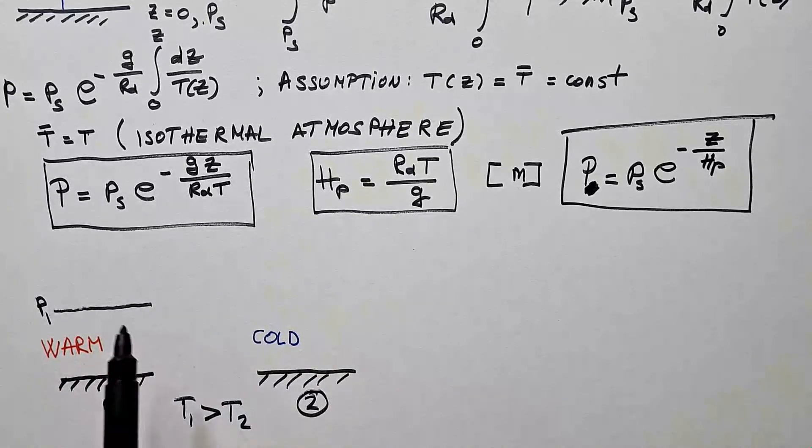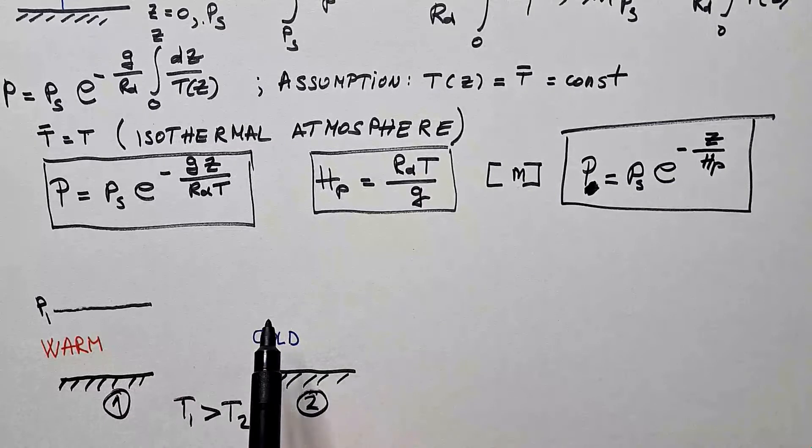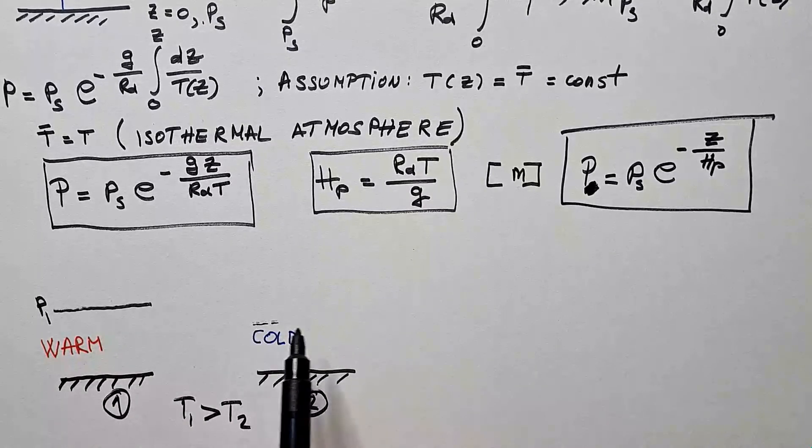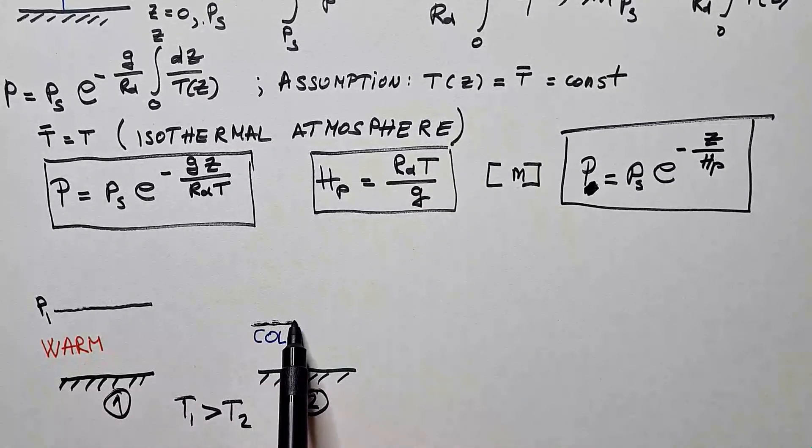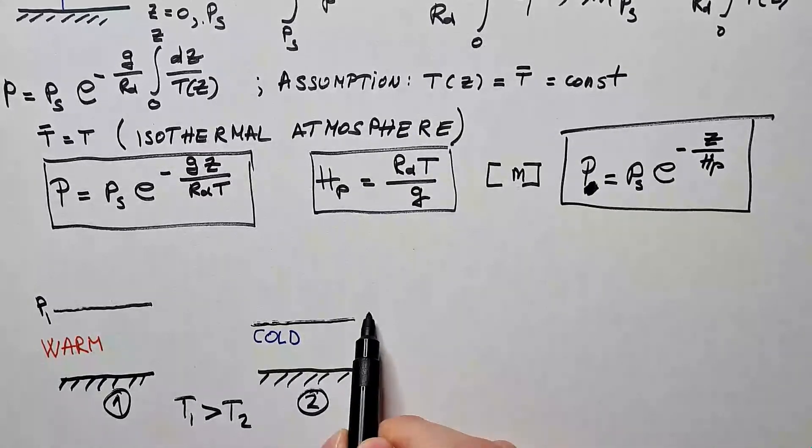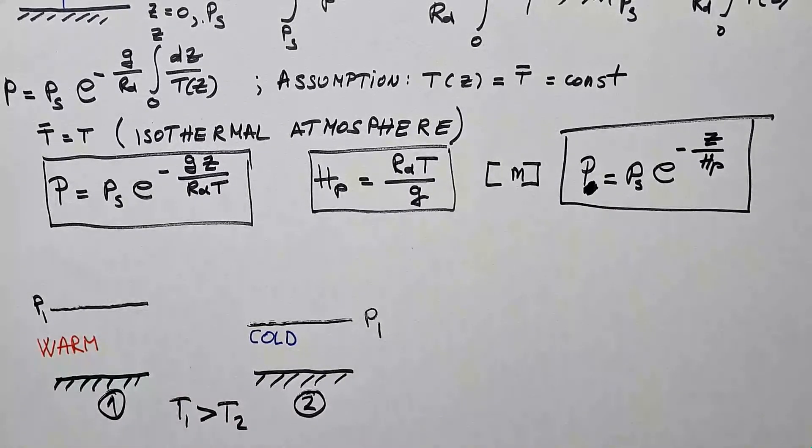And that means that this same pressure surface, p1, will be at lower altitude in cold air. Do you see this argument? I'll say it one more time.